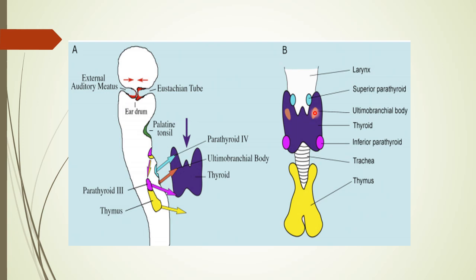In summary: the first pharyngeal pouch gives rise to the auditory tube and tympanic cavity; the second pouch gives rise to the palatine tonsil — more precisely, the lining epithelium of the tonsillar fossa and tonsillar crypts; the third pouch gives rise to the inferior parathyroid gland and the thymus; the fourth pouch gives rise to the superior parathyroid gland; and the C cells of the thyroid gland are derived from the ultimobranchial body representing the ventral wing of the fourth pharyngeal pouch.